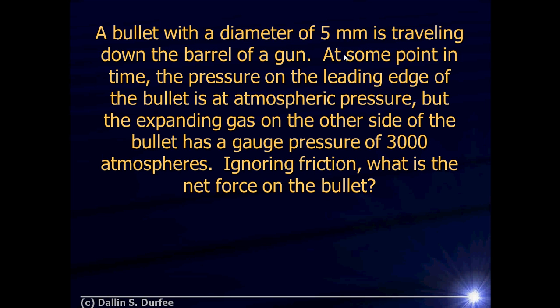A bullet with a diameter of 5 millimeters is traveling down the barrel of a gun. At some point in time, the pressure on the leading edge of the bullet is at atmospheric pressure, but the expanding gas on the other side of the bullet has a gauge pressure of 3,000 atmospheres. Ignoring friction, what is the net force on the bullet?